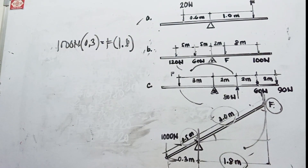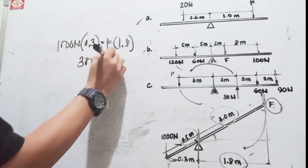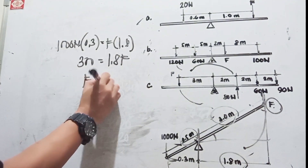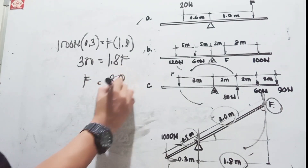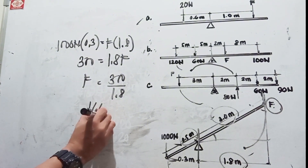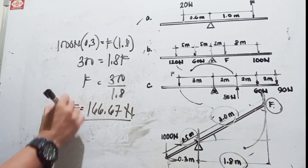So: 1,000 Newtons multiplied by 0.3 equals force multiplied by 1.8. That is 300 equals 1.8F. So F equals 300 divided by 1.8, which equals 166.67 Newtons. This is your force in Newtons.